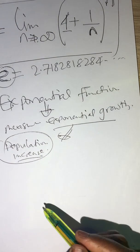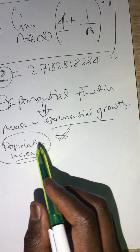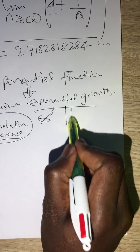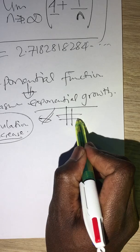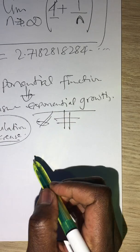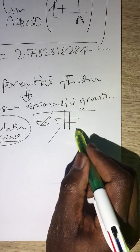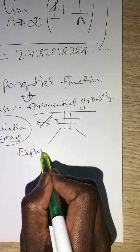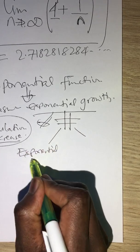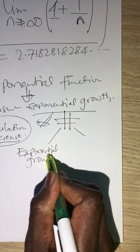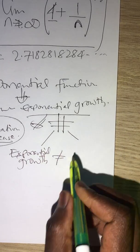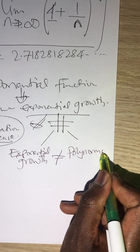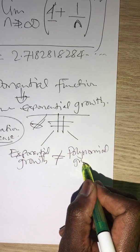The Euler constant is 2.7182818284, and so on. This is a very important constant used in calculus, in analysis, and even in some algebra and geometry as well. This constant helps us with what is referred to as the exponential function, which defines exponential growth — the kind of growth that grows very rapidly. For example, the number that increases at a very fast rate, and it is used for measuring population increase.